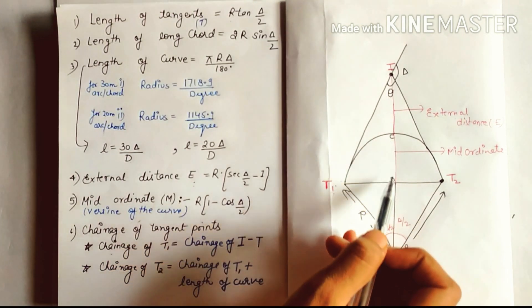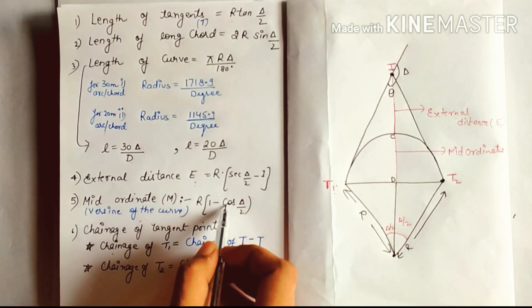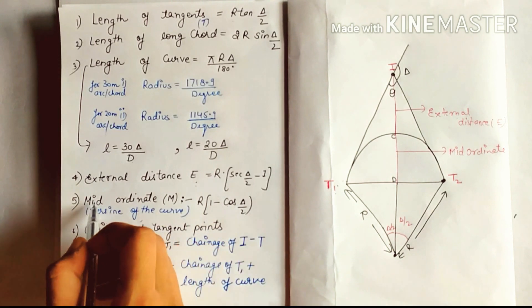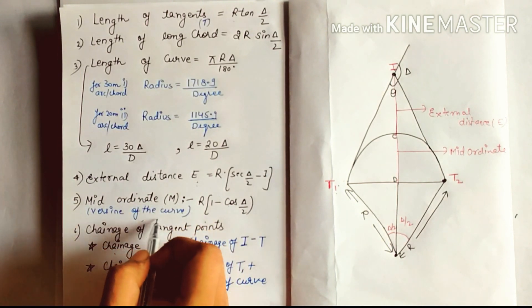Mid ordinate M, CD, R(1 - cos(Δ/2)). Mid ordinate is also called versine of the curve.